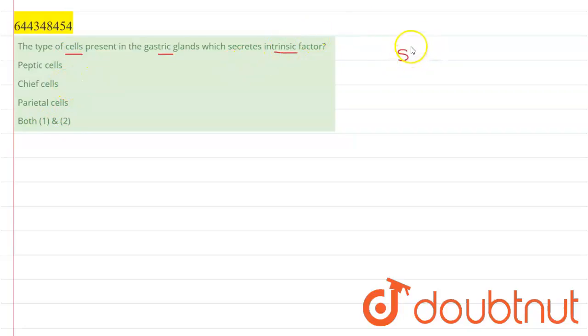Gastric glands are present in the stomach and they secrete various components like enzymes, inorganic acids, etc., which help in the process of digestion.